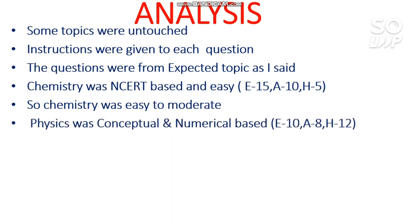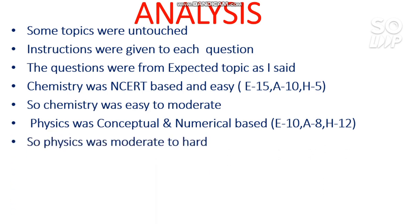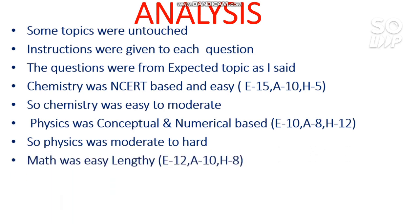For physics, it was conceptual and numerical-heavy. In terms of difficulty, 10 questions were easy, 8 were average, and 12 were hard, making the paper moderate to tough. This is the first time I've seen physics be moderate to tough — earlier it used to be moderate or easy to moderate. This time it was moderate to hard, as students suggested.